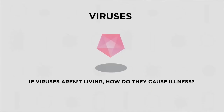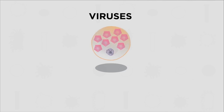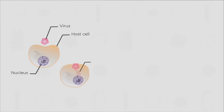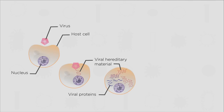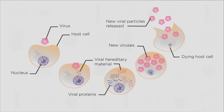So if viruses aren't living, how do they cause illness? Viruses are parasites. They can only reproduce in other living cells. They enter a host cell and hijack the host's genetic machinery. They make copies of their own viral genetic material instead and produce lots more virus particles. After lots of virus particles have been made, the host cell dies and the viral particles are released to infect more cells.